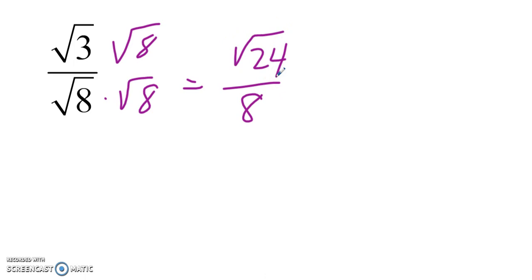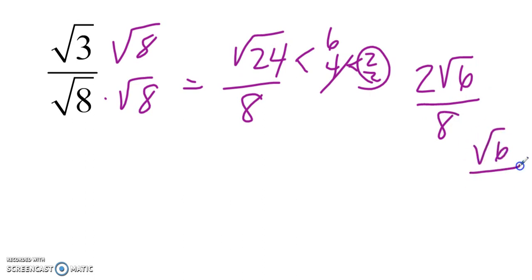But again, just like a fraction, this is not simplified because 24 does break down. So it breaks down to 6 and 4. Pair of 2's, 6 goes to 3 and 2, which does not break down. So it's 2 times the square root of 6 over 8. Then I'd realize that the 2 and 8 need to be simplified. So it's the square root of 6 over 4.